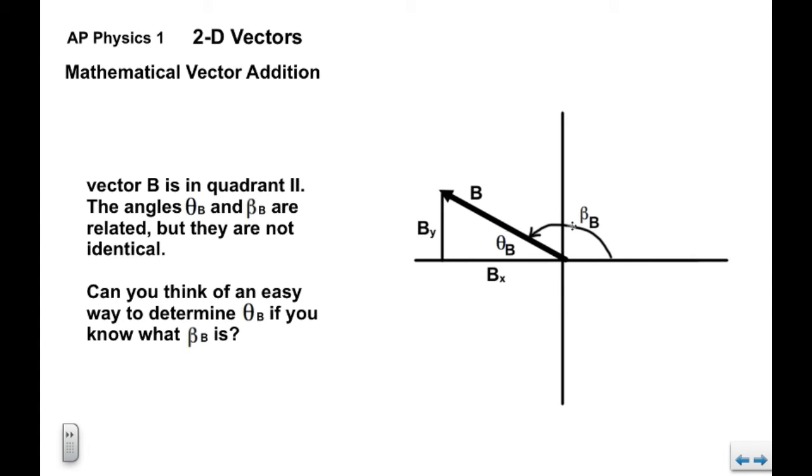But here's beta for angle b, measured counterclockwise from the positive x axis. Theta, however, is between the vector and the x axis in general, and it's always an acute angle. So here's your theta. And we can see in this case the angles are complementary.